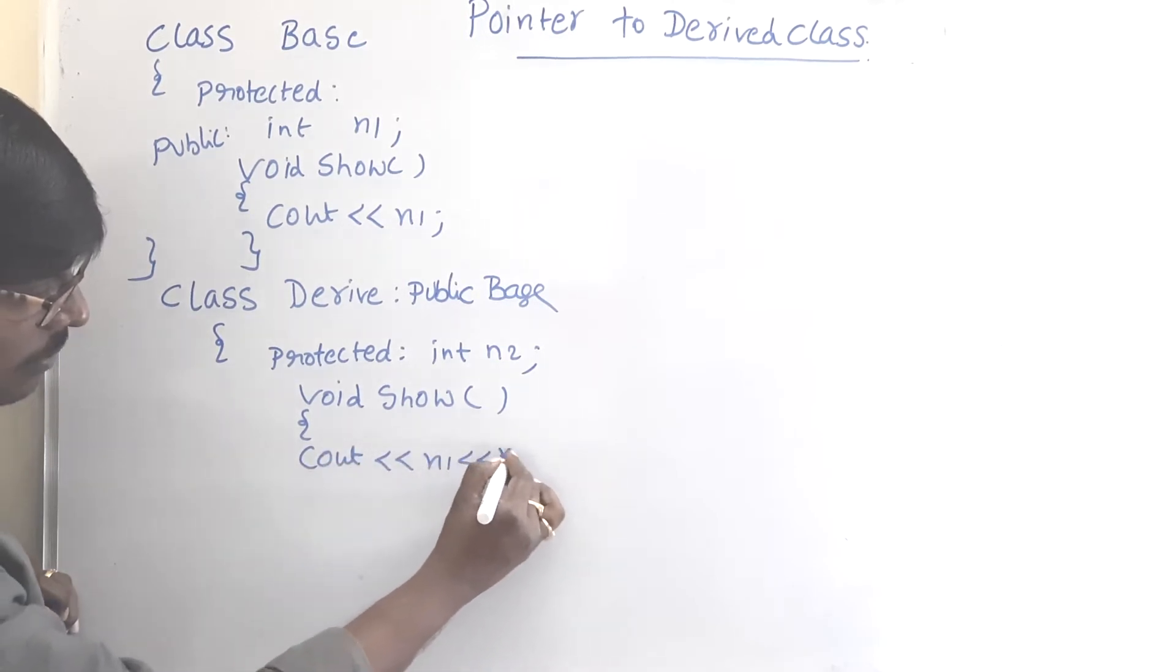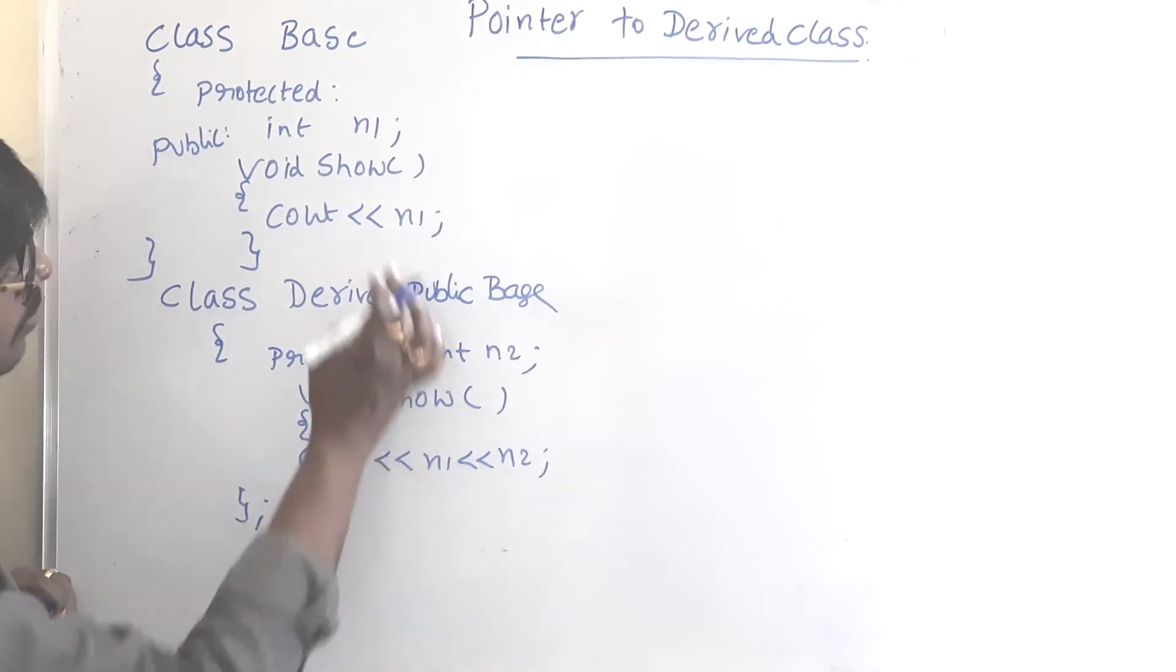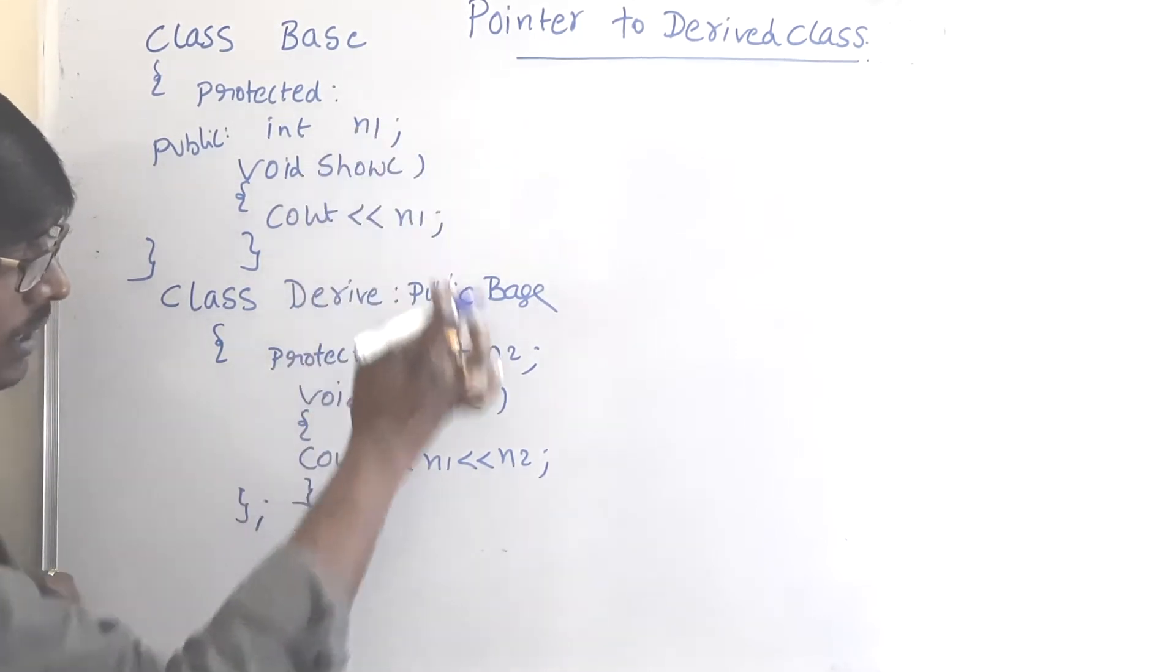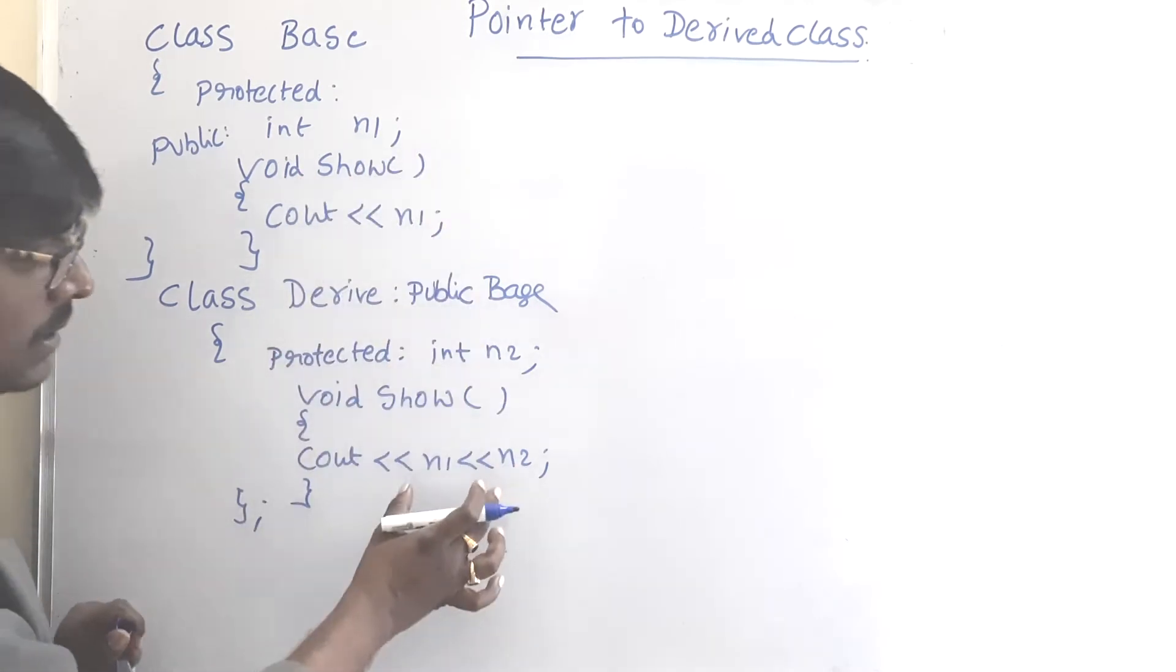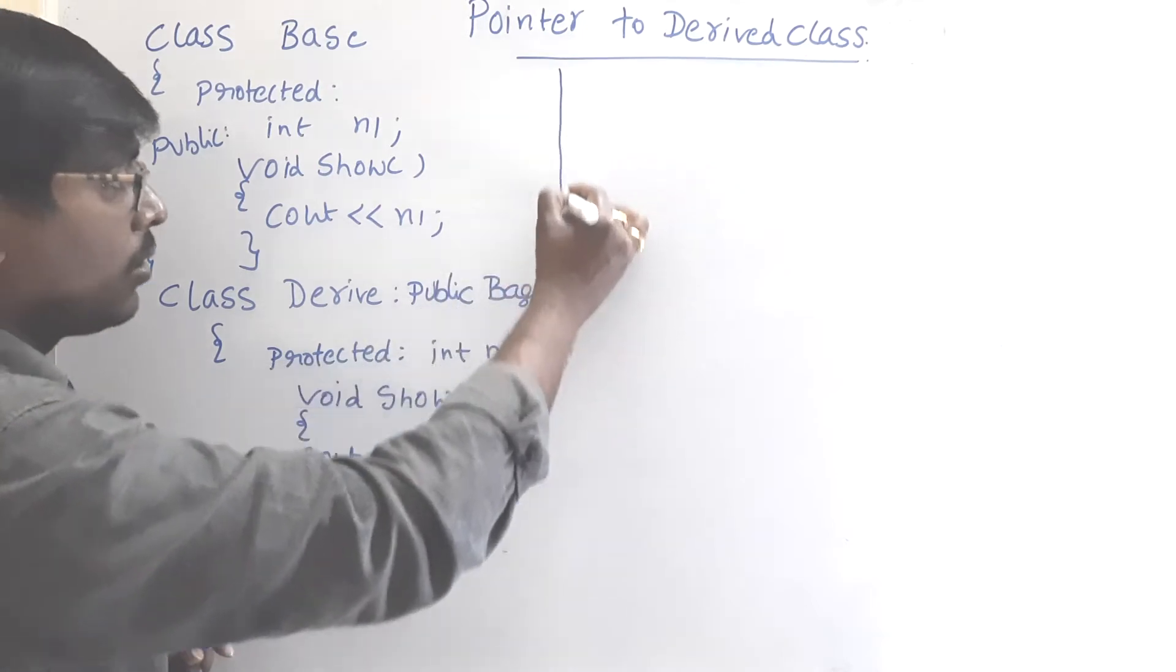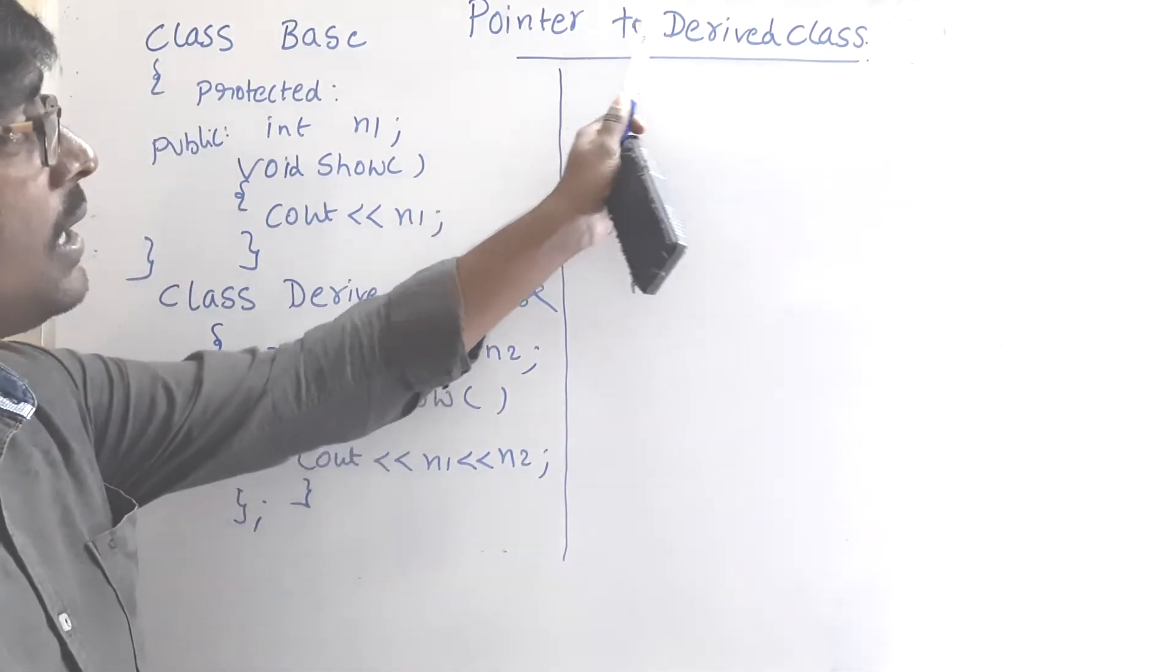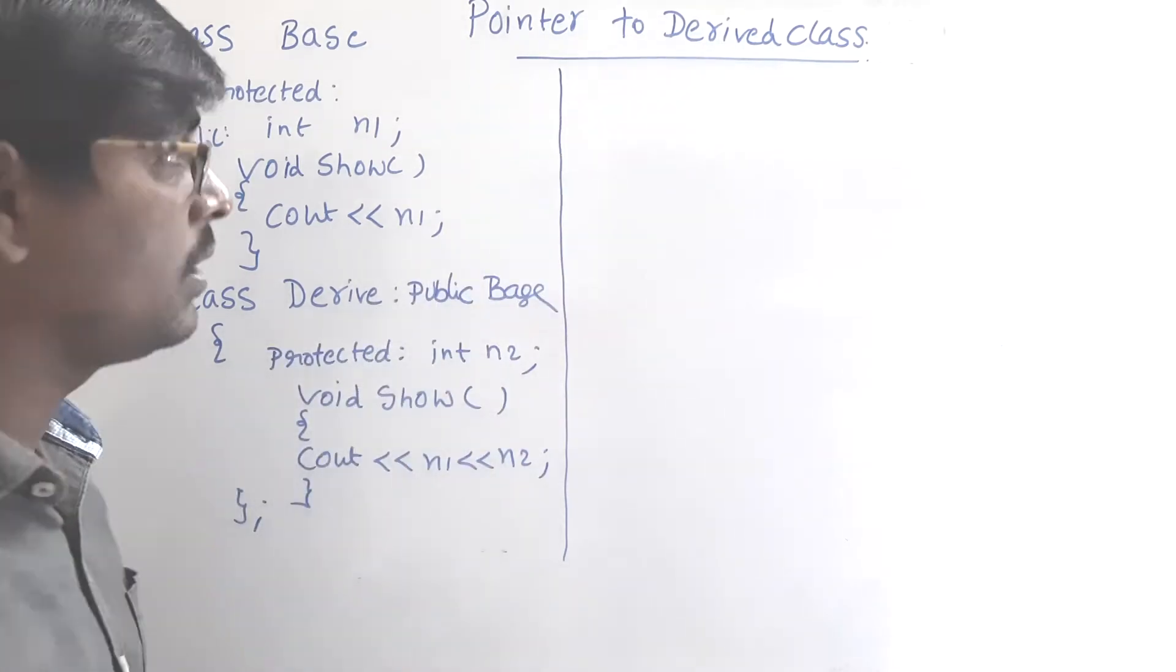Here I am printing two values. The n1 variable is from the parent class. We can access the parent class members in the child class also. That is the reason I am using n1 variable. Now coming to the main important thing. We have to declare a pointer to the derived class.